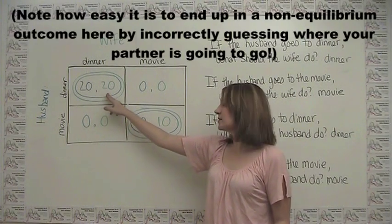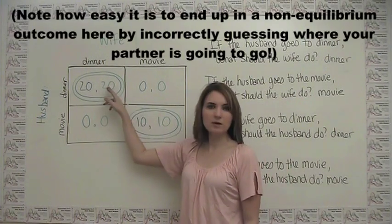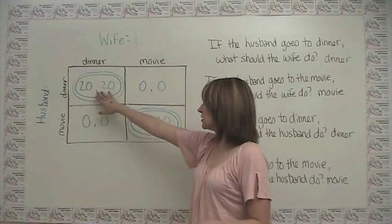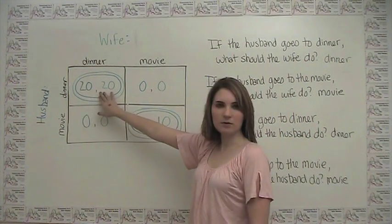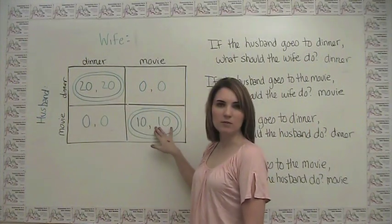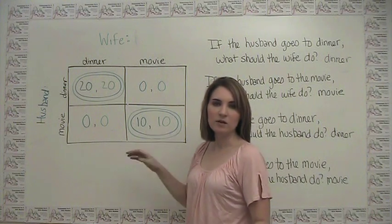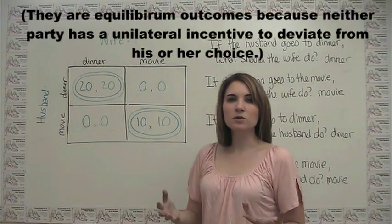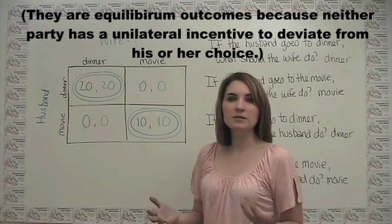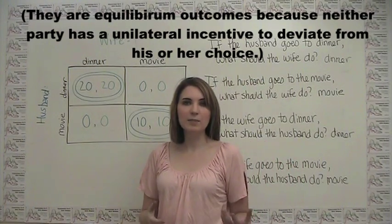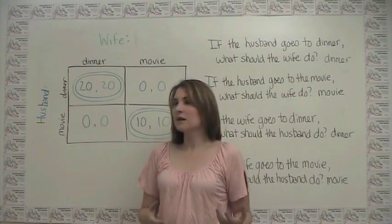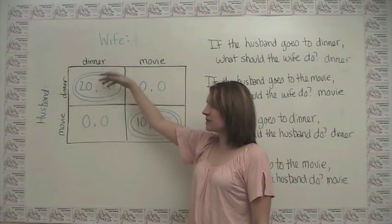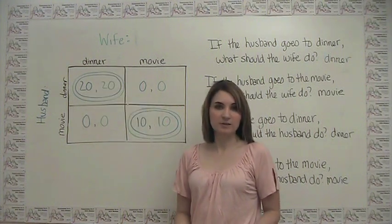Unlike the last example, we have two equilibria here. Either they both go to dinner or they both go to the movie are, mathematically speaking, equilibrium outcomes. Which is sort of frustrating because we don't know which one's actually going to happen — it's really hard to guess what the wife thinks the husband is going to do and vice versa.